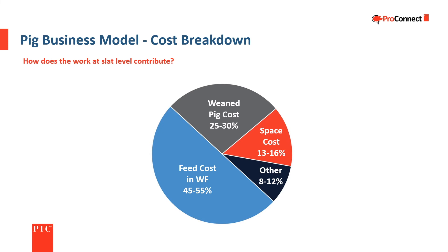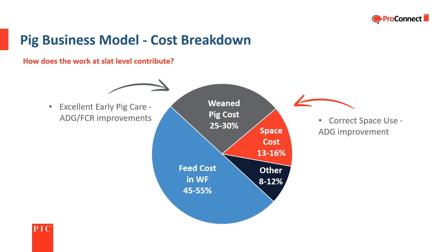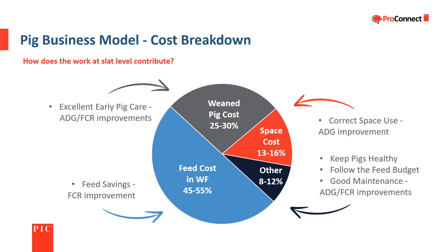The cost of producing pork is generally divided into four areas. What we do at the barn or slat level contributes to protecting the money invested and reducing the cost of production. The cost of a weaned pig is generally 25 to 30% of the total cost of production. Excellent early pig care helps promote improvements in average daily gain and feed conversion. Feed is the largest cost associated with growing pigs. Maintaining the correct feeder setting through regular adjustments can reduce feed wastage and improve feed conversion, resulting in lower feed costs per pound of gain. The remaining 8 to 12% of costs are from a variety of areas including pig health, barn maintenance, and feed budget.